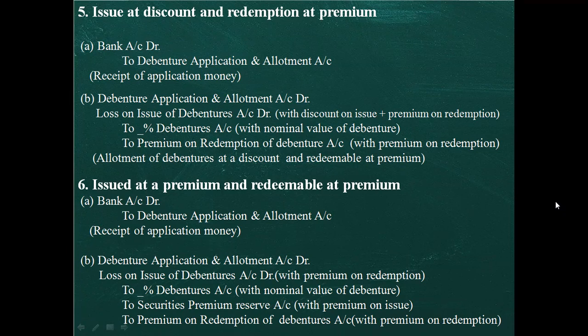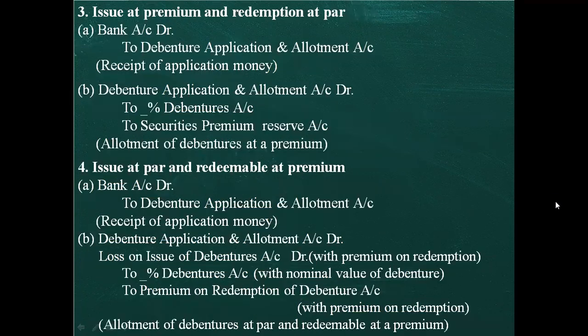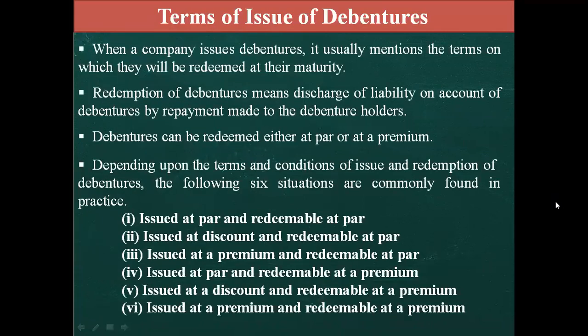Case 6 — issued at premium, redeemable at premium: Debentures issued at ₹110 (face value ₹100, premium ₹10). Entry 1: Bank Account debit to Debenture Application and Allotment Account at ₹110. Entry 2: Debenture Application and Allotment Account debit, Loss on Issue of Debenture Account debit (for redemption premium), to So-and-So% Debenture Account (face value), to Securities Premium Reserve Account (issue premium), to Premium on Redemption of Debenture Account (redemption premium). These six cases cover all terms of issue of debentures, decided at the time of issue.